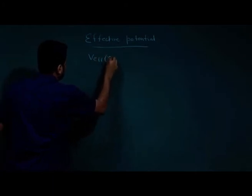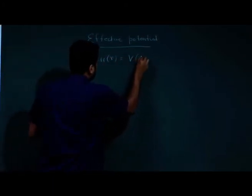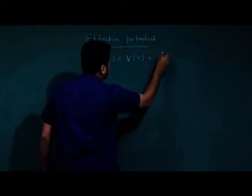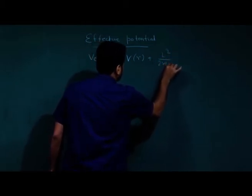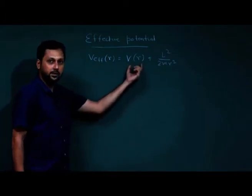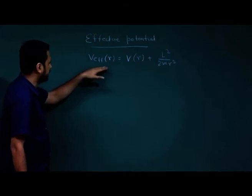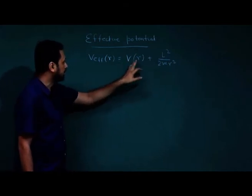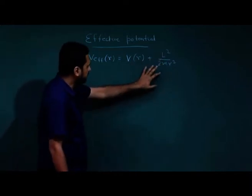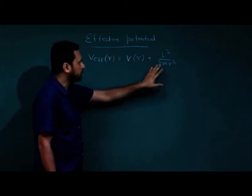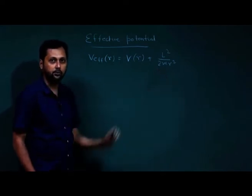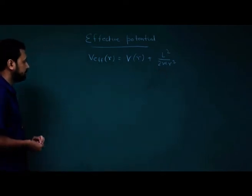Let us start with V_effective = V(R) + L²/(2MR²). We will take specific examples of V(R) and see how the nature of this effective potential changes with different properties of V(R). This second term is fixed for any central orbit, and it can be shown that it is equivalent to the centripetal acceleration — I am leaving that to you as an exercise.